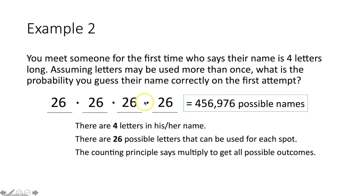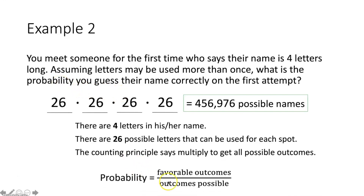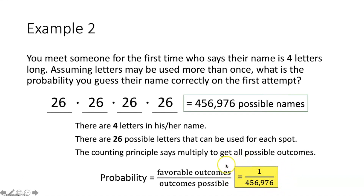Probability is the ratio of favorable outcomes to the total number of possible outcomes. There are 456,976 possible names and you only get one guess — one permutation of these letters. So the probability of guessing correctly on the first attempt is one out of 456,976. You could increase this probability in future classes by removing unlikely letter combinations like AAAA.